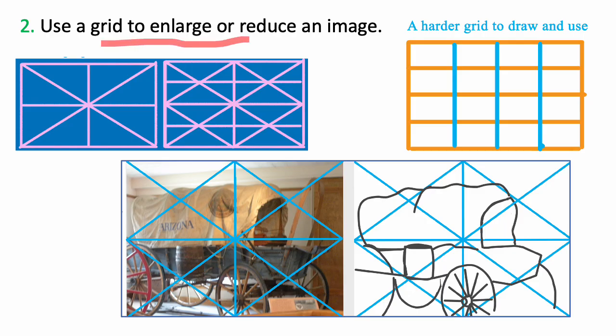Another important use of grids is to enlarge or reduce an image. The easiest way to do that is to draw diagonals from each corner and then horizontal and vertical lines through the middle. And if you want the grid to be smaller, you do the same thing with the smaller rectangles.